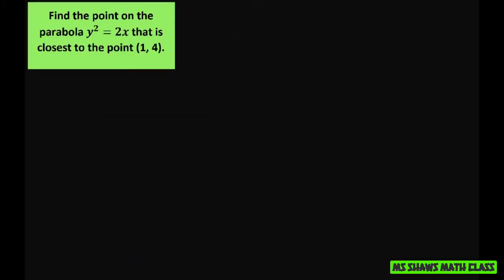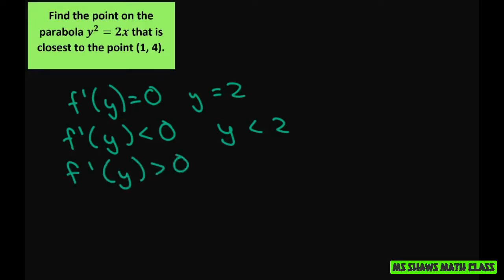So basically, f prime of y equals 0 when y equals 2. We got that. So f prime of y is negative when y is less than 2. And f prime of y is positive when y is greater than 2.